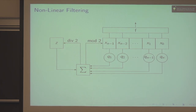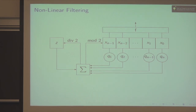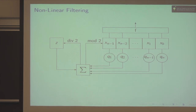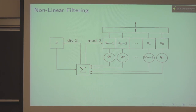You can take a feedback with carry shift register and, instead of taking the output on the right side, filter off whatever the current state is using a bent function F. So if F is a bent function and the FCSR produces an M sequence — going through all possible states — then F will reach all of its possible values over the full period of the shift register.